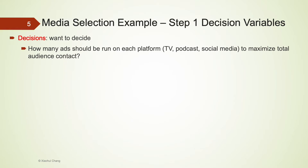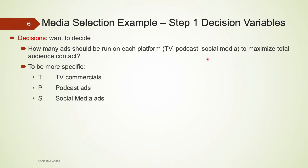The first part of step one involves defining the decision variables. We usually start with the final outcome of the business decision problem first when we try to identify these variables. The company tries to decide the number of ads to be run on each platform. One recommendation, not necessarily the optimal solution, is to run 10 ads on each of the three platforms — 10 TV commercials, 10 podcast ads, and 10 social media ads.